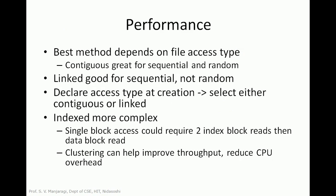Now let us look at the performance of allocation methods. Contiguous allocation is useful for both sequential and random access. Linked allocation is good for sequential access but not for random access, because in a linked list we access nodes sequentially one after another — random access is not possible. Indexed allocation is more complex because a single block access requires reading the index block first. Caching can help improve throughput and reduce CPU overhead.